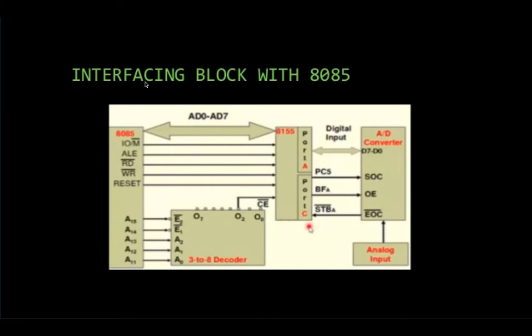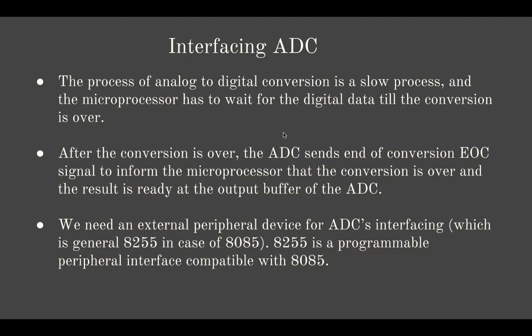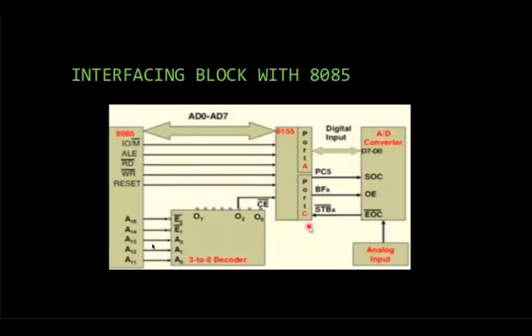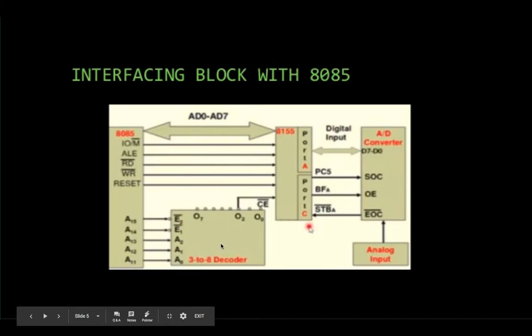Here we have the interfacing block diagram with the 8085 of 8155. But this is similar to the 8255 we had, similar to the functioning of 8255 we had which we performed the experiment with. This diagram shows the connection socket of the ADC to the microprocessor. Here we have the decoder logic for selecting the 8155, the chip select decoder logic.